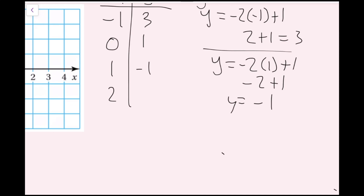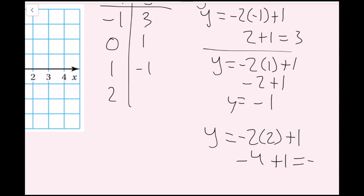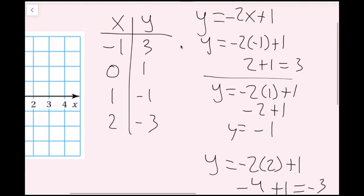For x equals 1: y equals negative 2 times 1, which is negative 2, plus 1, which is negative 1. For x equals 2: y equals negative 2 times 2 plus 1, giving negative 4 plus 1, which equals negative 3. If you notice, every time x increases by 1, y decreases by 2. So once you find that pattern, you don't need to show all of the work — though it's a good idea to do so.